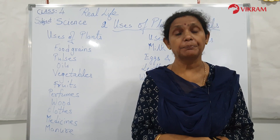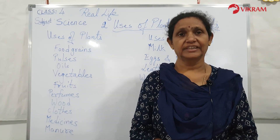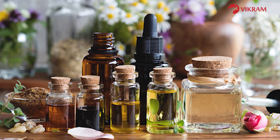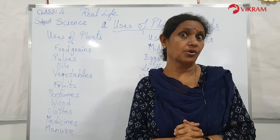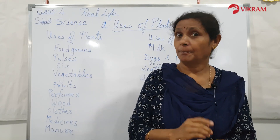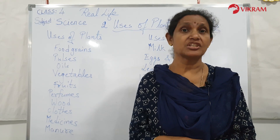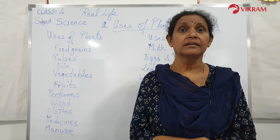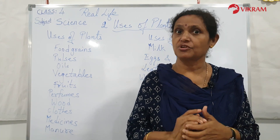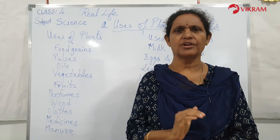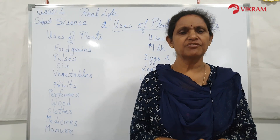The next point is oils. We get oils like coconut oil, groundnut oil, mustard oil, and sunflower oil from their respective plants. Vegetable oils are used in making vanaspati, and oils are rich in fats. You should eat oils, but in limited quantities — too much oil is not good for your health.